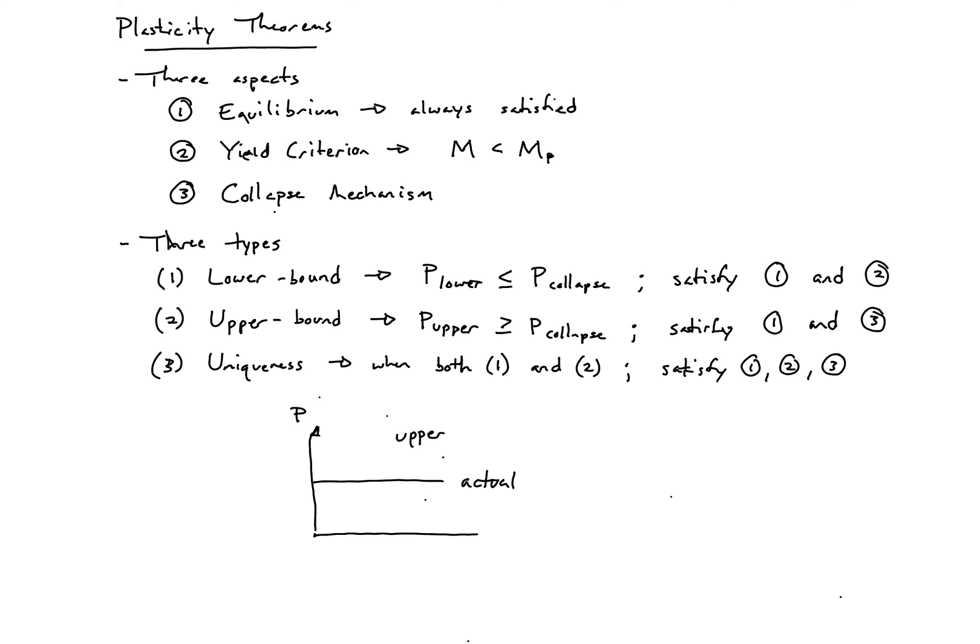For our upper bound theorems, we're always going to be above this load and approach it from the top. With our lower bound theorems, we're always going to be below and approaching the actual load from the bottom. If our uniqueness theorem is satisfied, then we'll have the exact actual capacity or collapse load of our section.